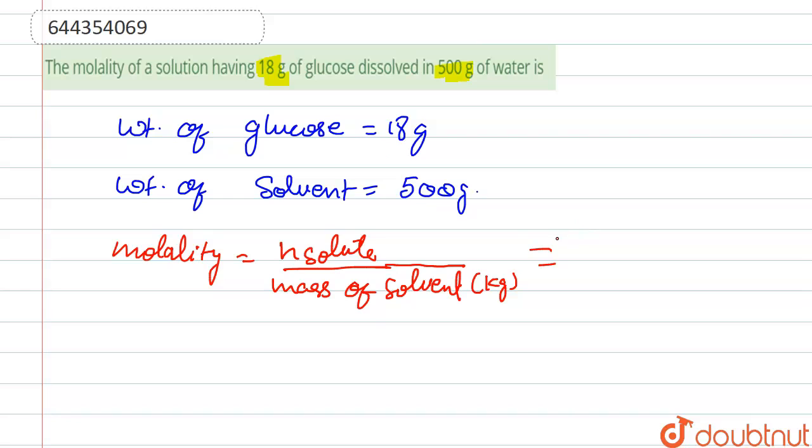So 18 upon 180, and mass of solvent, that is 500 times 10 to the power minus 3.